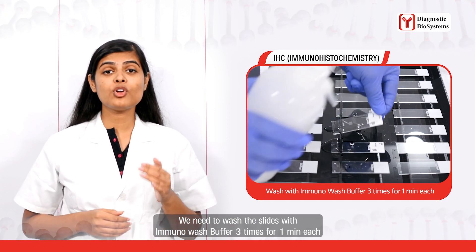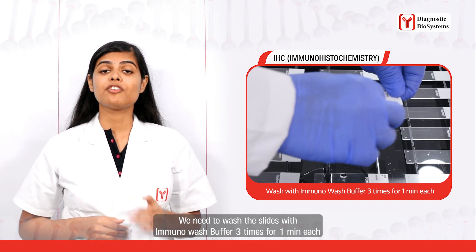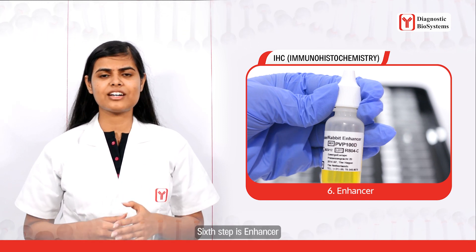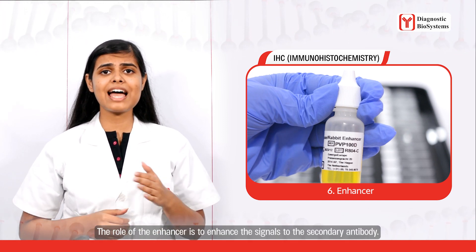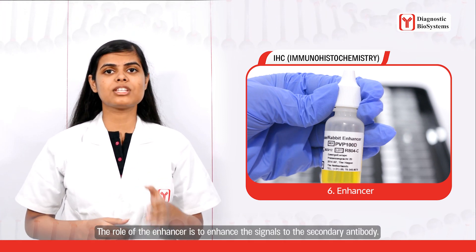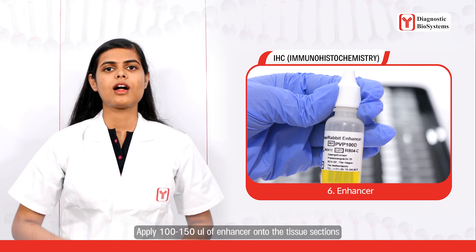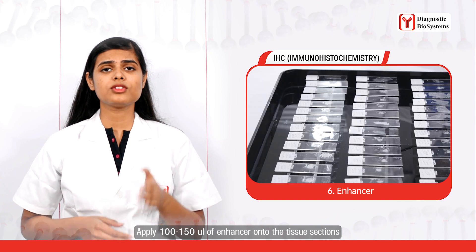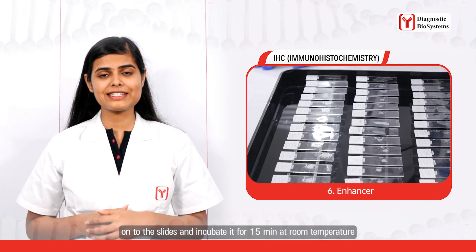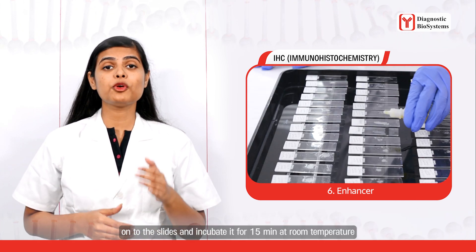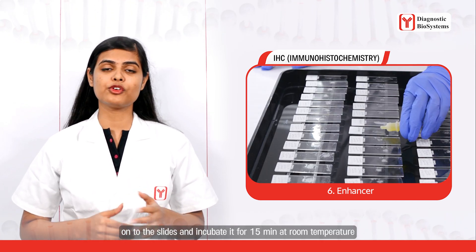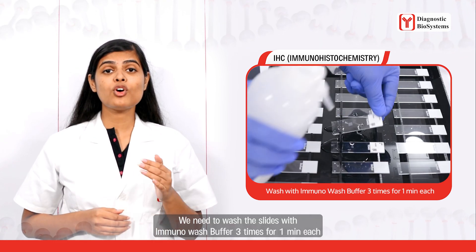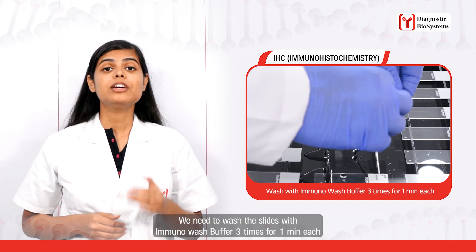The sixth step is the enhancer. The role of the enhancer is to enhance the signal to the secondary antibody. Apply 100 to 150 microliters of enhancer to the tissue sections and incubate for 15 minutes at room temperature, then wash the slides with immunowash buffer three times, one minute each.